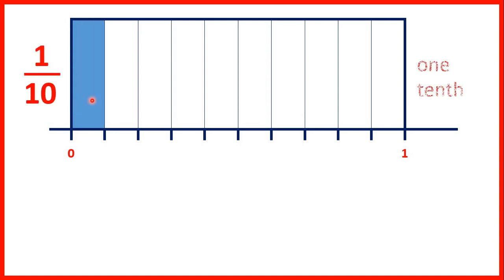So if we color in one of those tenths, we can write that as a decimal as 0.1. So the number before the decimal point tells us how many wholes we have, and we don't have any complete rectangles. Then we have a decimal point, which is like a full stop. Then the number after the decimal point always tells us how many tenths we have. We have one tenth of our fraction bar shaded, so we write that as 0.1 if we're writing it as a decimal.